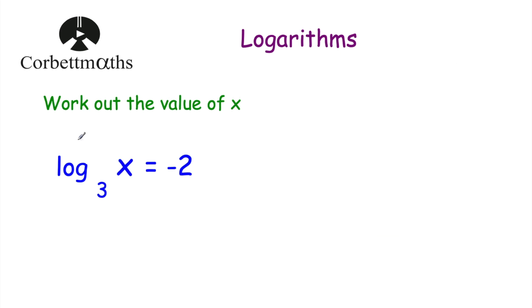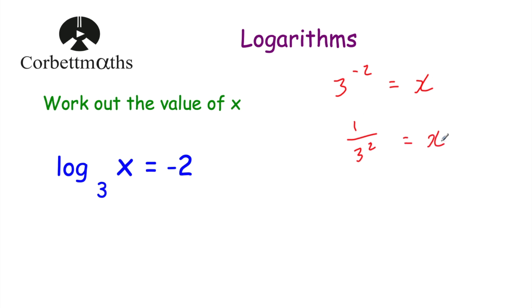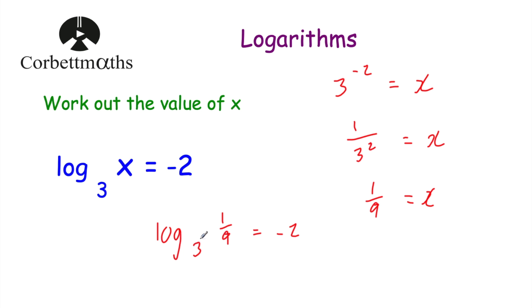Question 7: work out the value of x. We have log to base 3 of x is equal to negative 2. Writing in index form: 3 to the power of negative 2 equals x. To handle the negative power we do 1 over the positive power: 1 over 3 squared. 3 squared is 9, so x equals one ninth. Log to base 3 of one ninth equals negative 2 — what power do we raise 3 by to get one ninth? Negative 2, since 1 over 3 squared gives us one ninth. So x is one ninth.